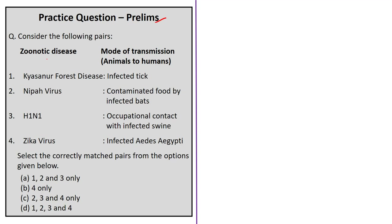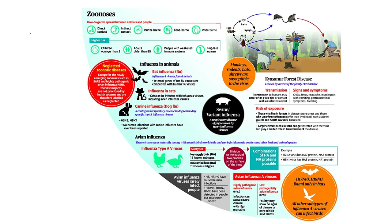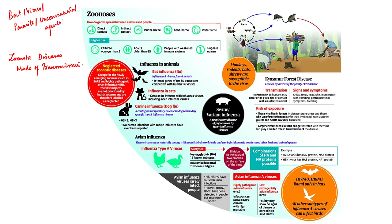Another news article reports that the state of Kerala is battling a host of zoonotic diseases, impacting public health and the economy. In this context, it is important to know what zoonosis means: a zoonosis is an infectious disease caused by bacteria, virus, parasite, or any unconventional agent which spreads from non-human animals — usually vertebrates — to humans. As per the World Health Organization, zoonosis is any disease or infection naturally transmissible from vertebrate animals to humans.